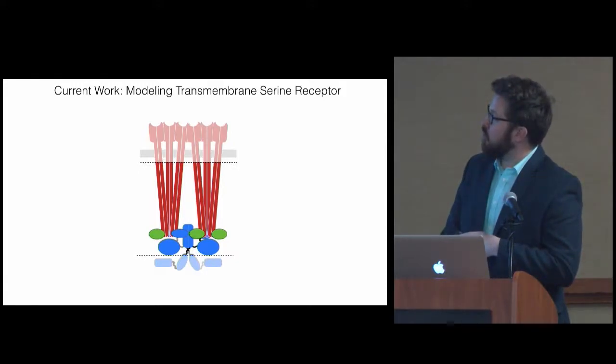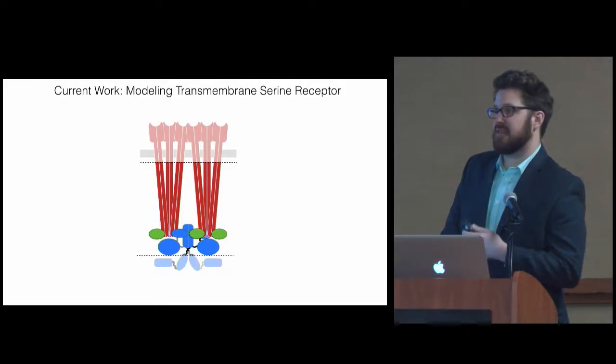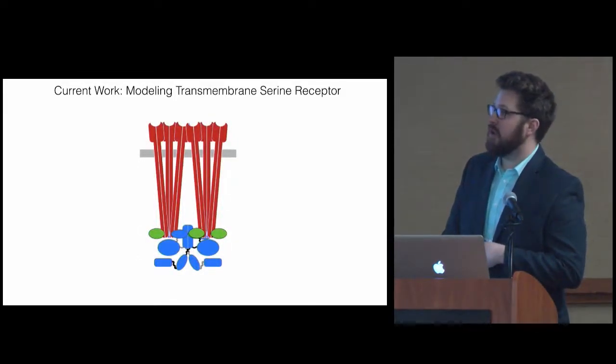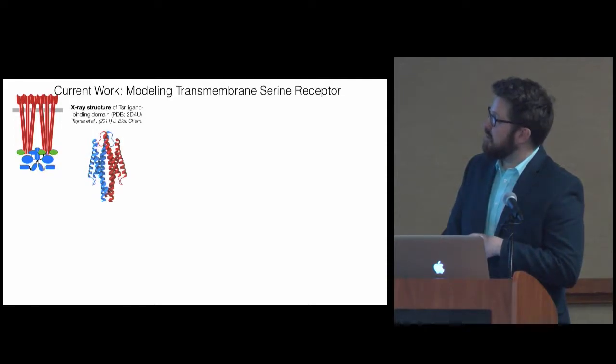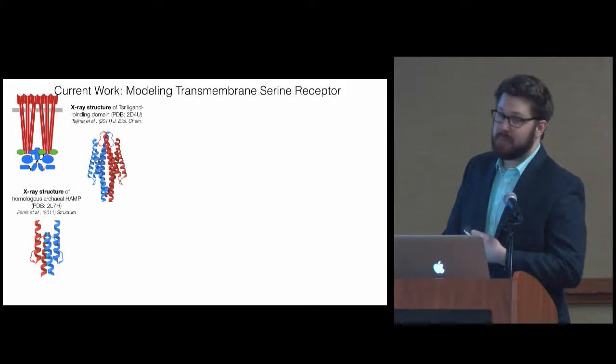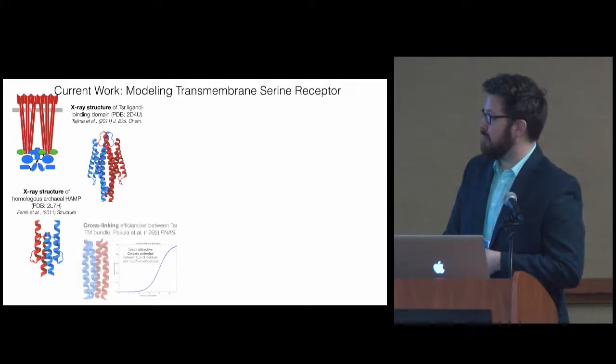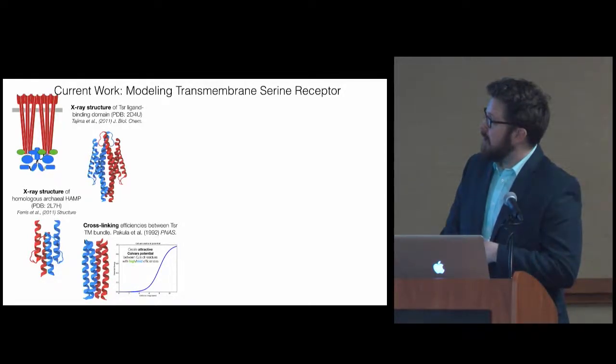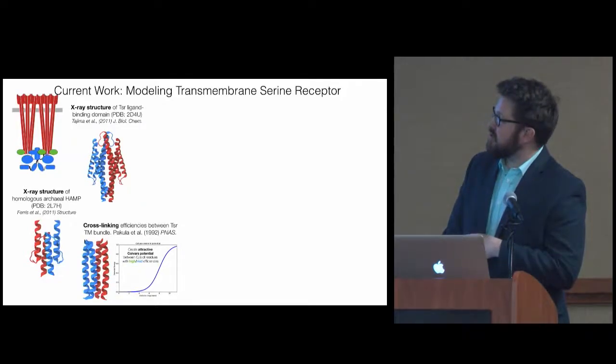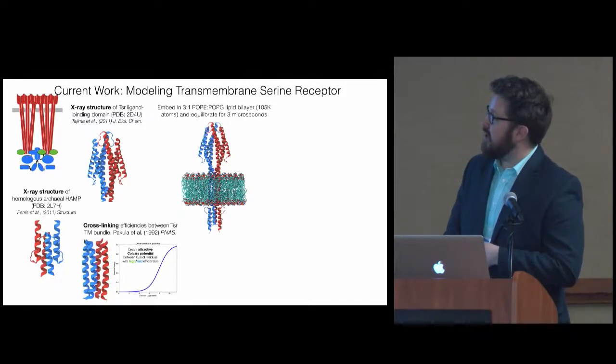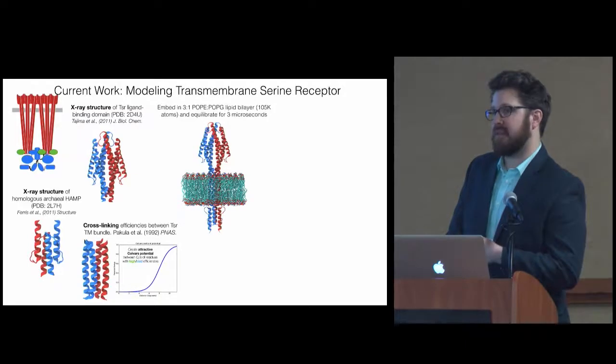So very quickly, the current work we're working on or moving towards. What I've shown you is this cytoplasmic portion where we used the existing structural information. But we really want the whole transmembrane receptor. My recent work has been to basically synthesize the existing receptor structural data to come up with an intact transmembrane model of a chemoreceptor from E. coli. We were able to do this using an explicit X-ray structure for the periplasmic domain of the serine receptor, some homology modeling for this HAMP domain, and cross-linking efficiencies between various helices of the transmembrane domain. We placed that in a PLPE-PLPG lipid bilayer to mimic the inner membrane of E. coli. And then equilibrated the full receptor.